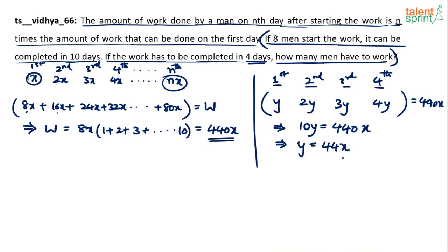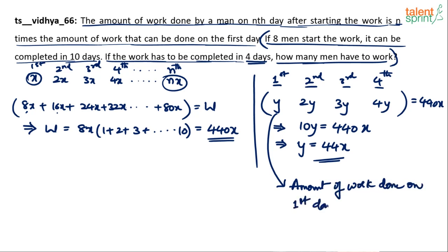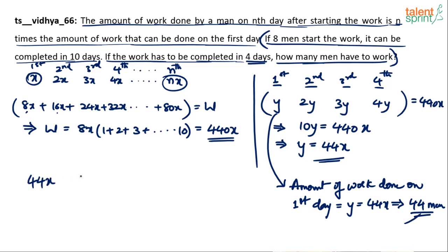So y = 44x, which means the amount of work done on the first day is 44x. Since one man can do x per day, we need 44 men. That's the answer: 44 men should start this work so they can complete it in 4 days. To verify: 44 men will do 44x on day 1, 88x on day 2, 132x on day 3, and 176x on day 4.